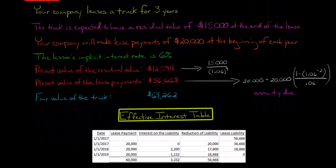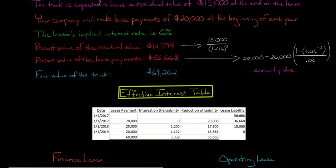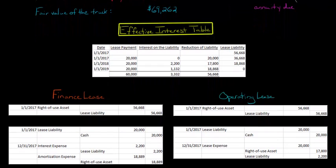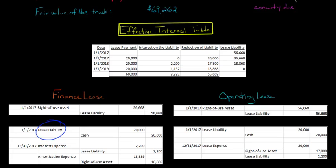For the effective interest table, we take the present value of the lease payments — $56,668 — as our lease liability at the beginning. We recognize interest on the liability and then have reductions each period. That process is the same whether it's an operating lease or a finance lease. For the initial journal entries, both finance and operating leases debit right-of-use asset and credit lease liability for the same amount of $56,668. On the very first day, the first lease payment is also made, reducing the lease liability by debiting it for $20,000 — identical under both methods.